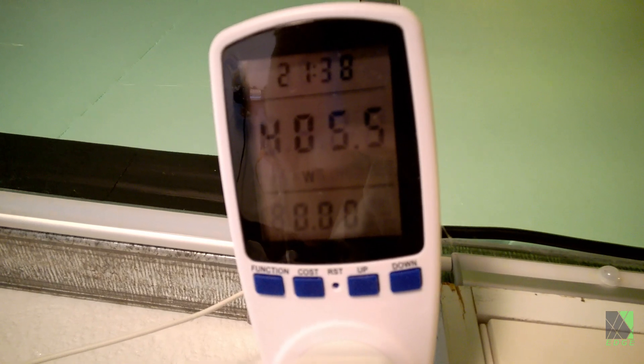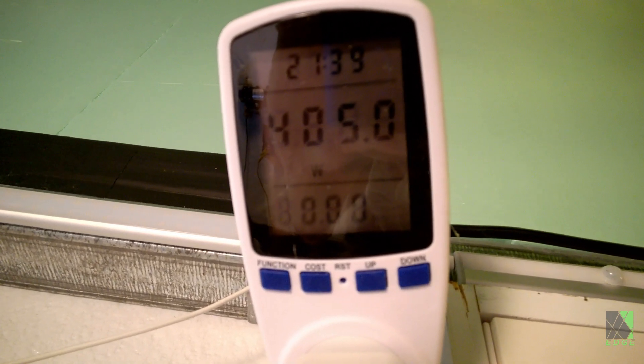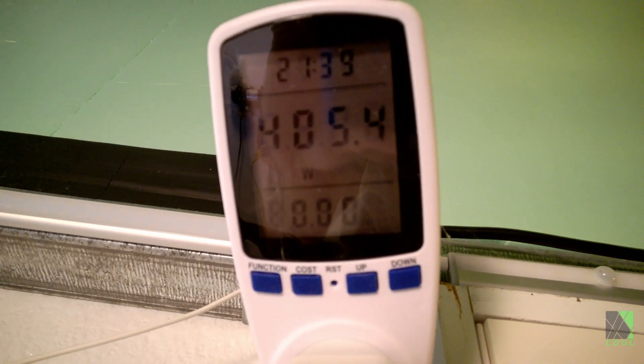Note that the baseline power consumption for this 5000 BTU air conditioner at this time of day is about 405.7 watts.